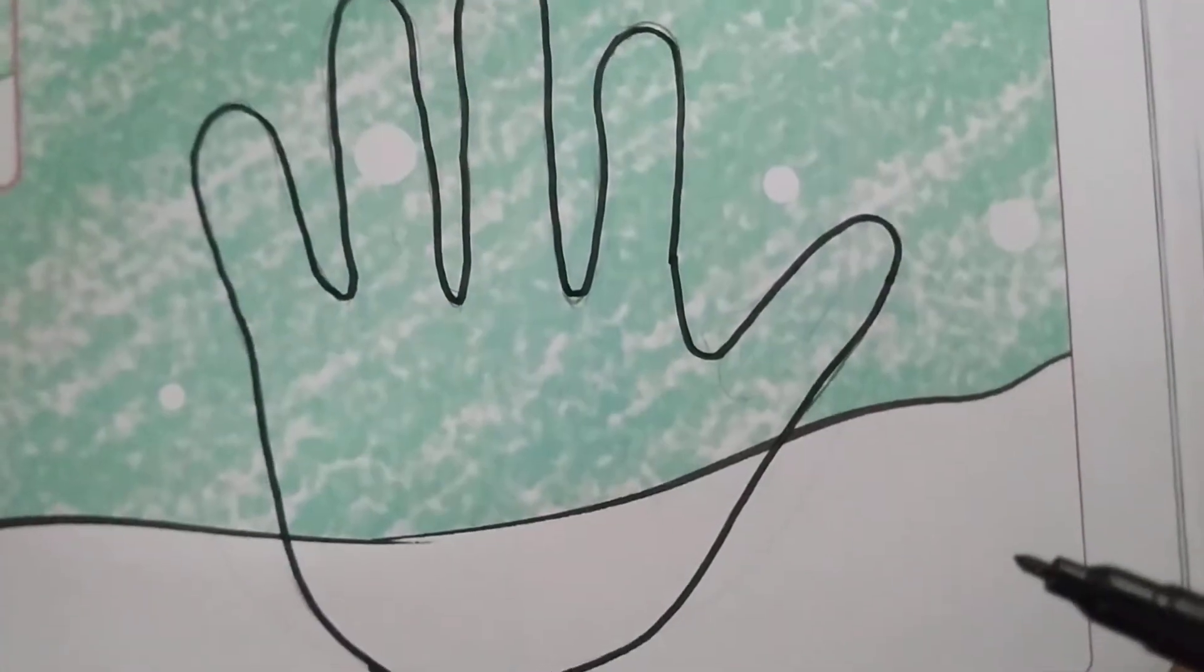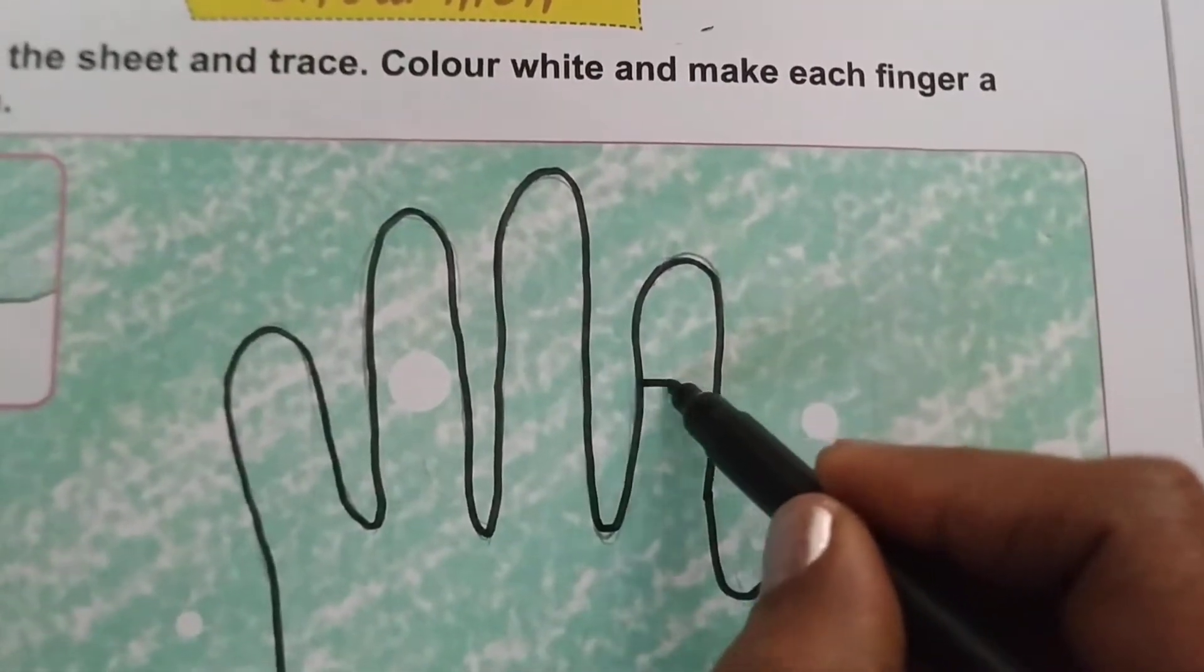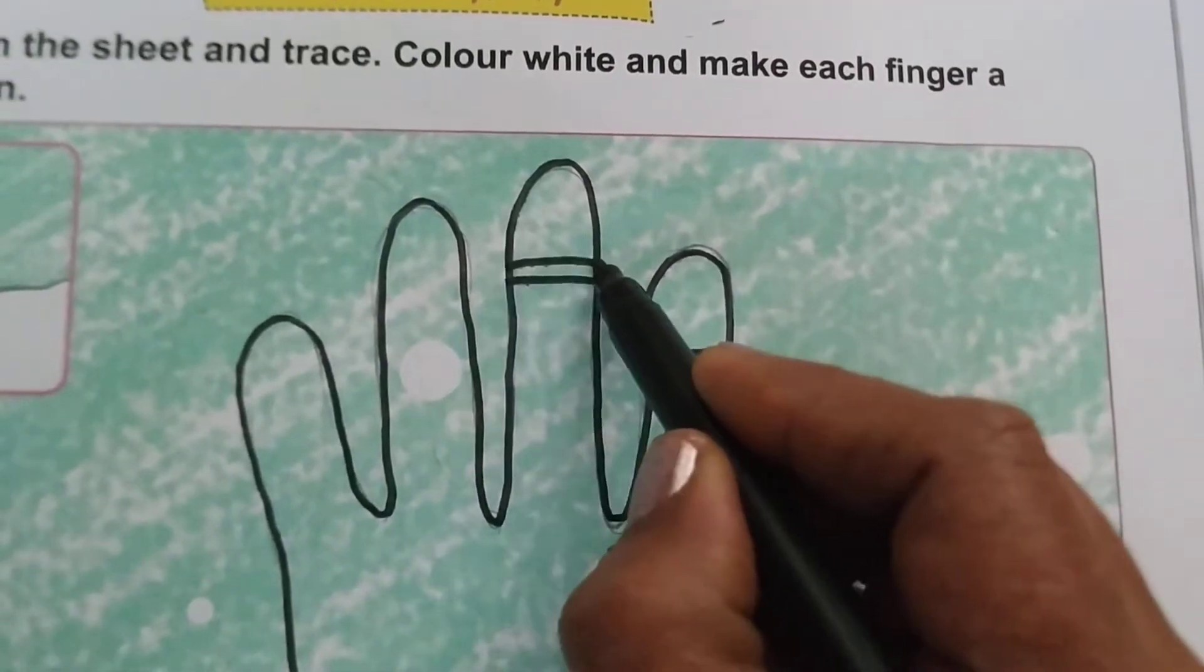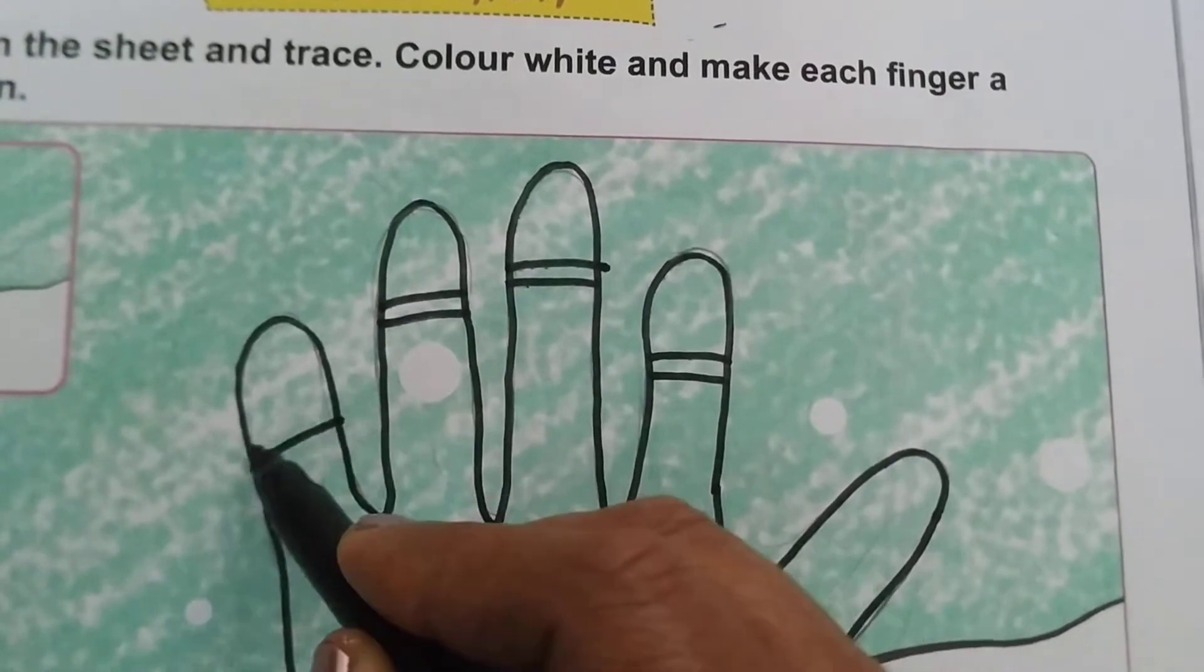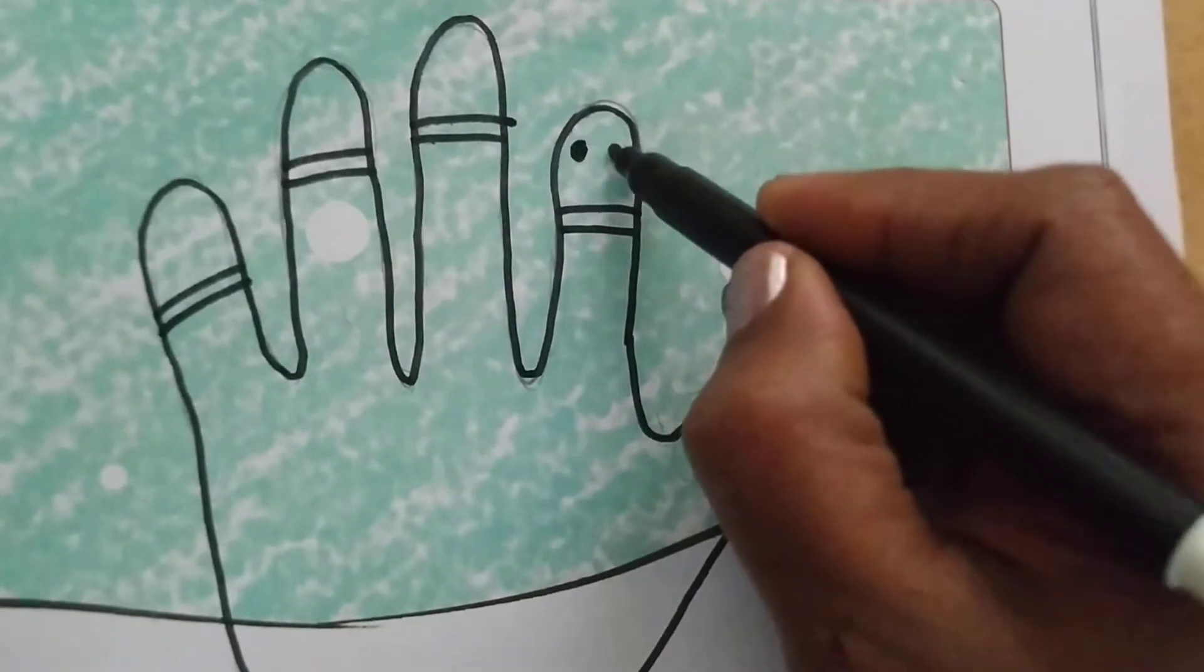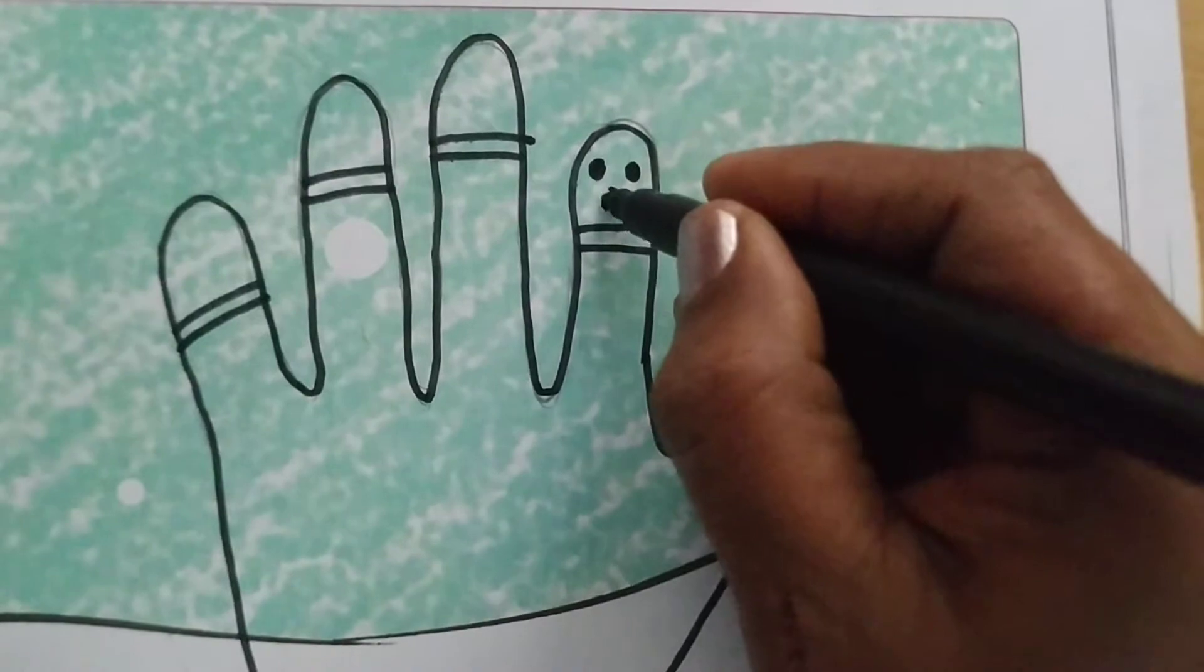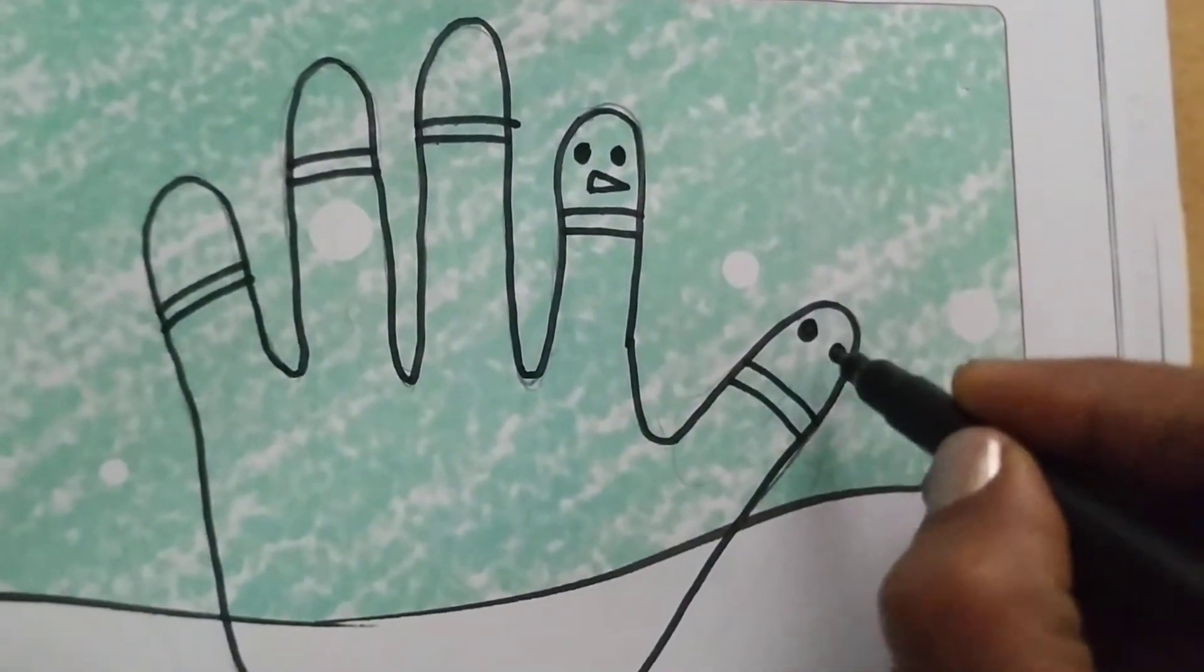You will do the outline of your hand, and after that you will make the snowman face in all the fingers. Make a double line first, then you will make two eyes and a beak like this.